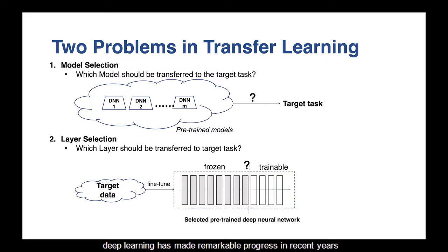Driven by massive labeled data, deep learning has made remarkable progress in recent years. However, in many real-world scenarios, we often encounter the dilemma where limited data are available. In this case, we often transfer the deep model pre-trained on another data-rich task to resolve the current data-limited task.